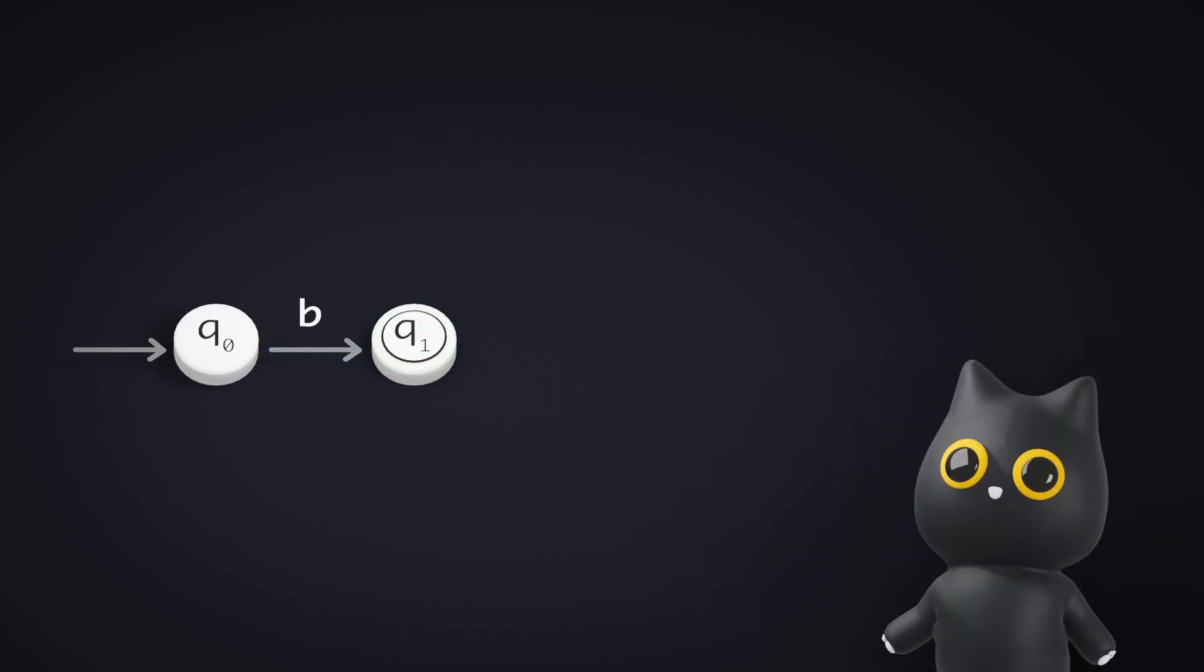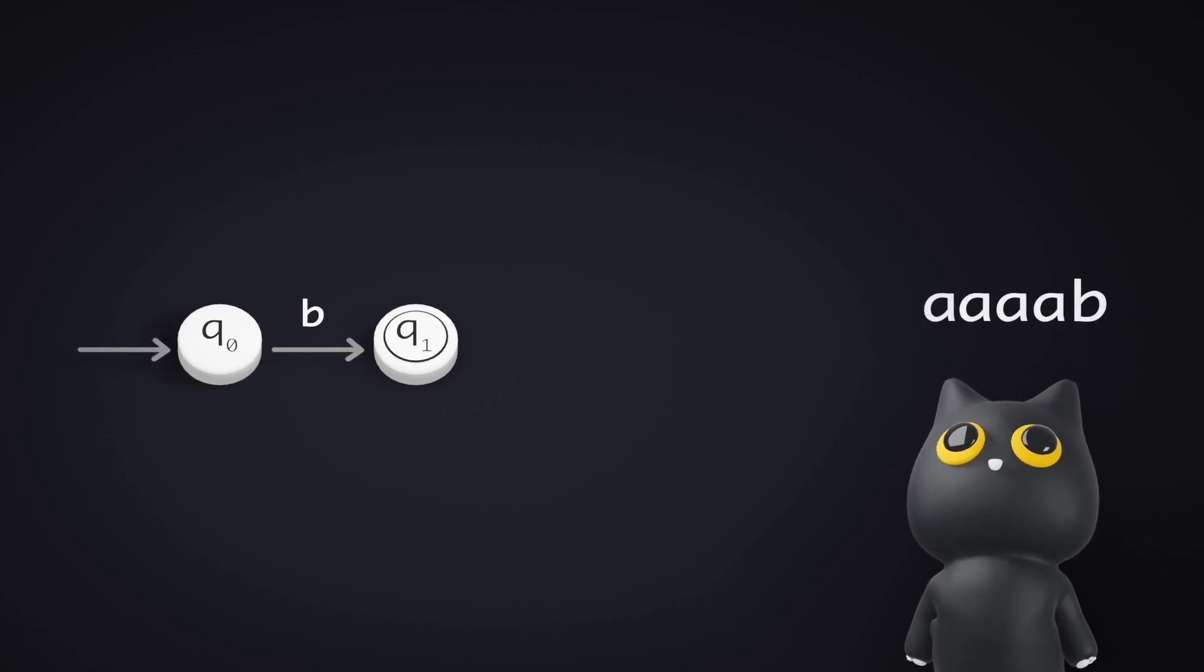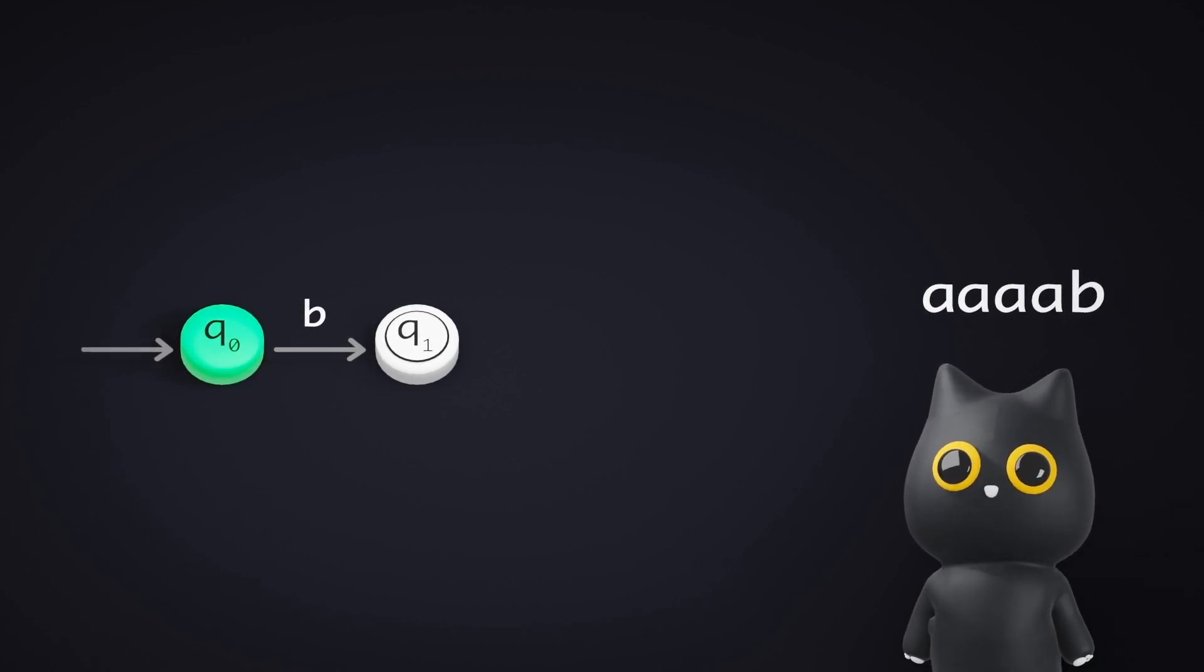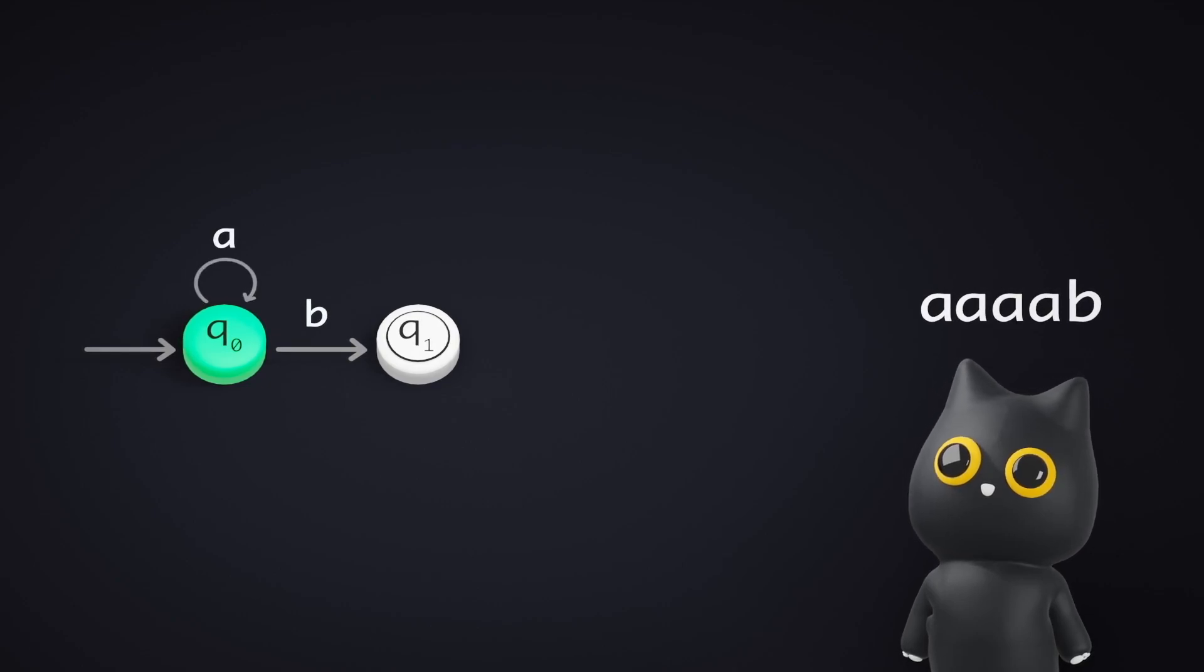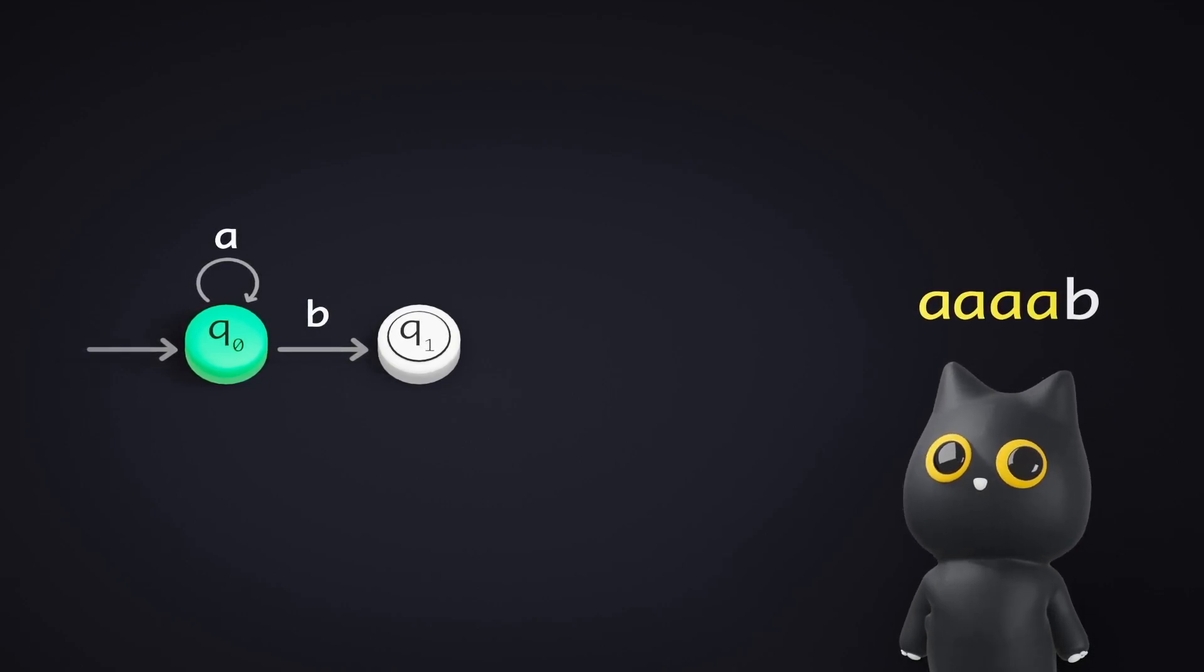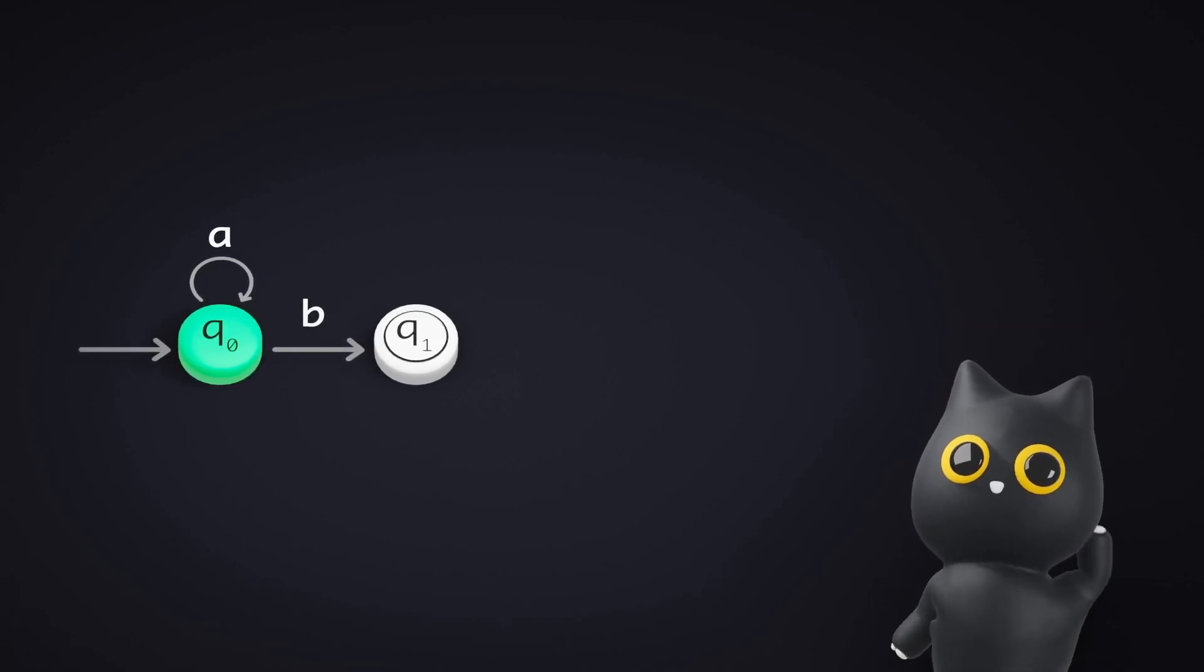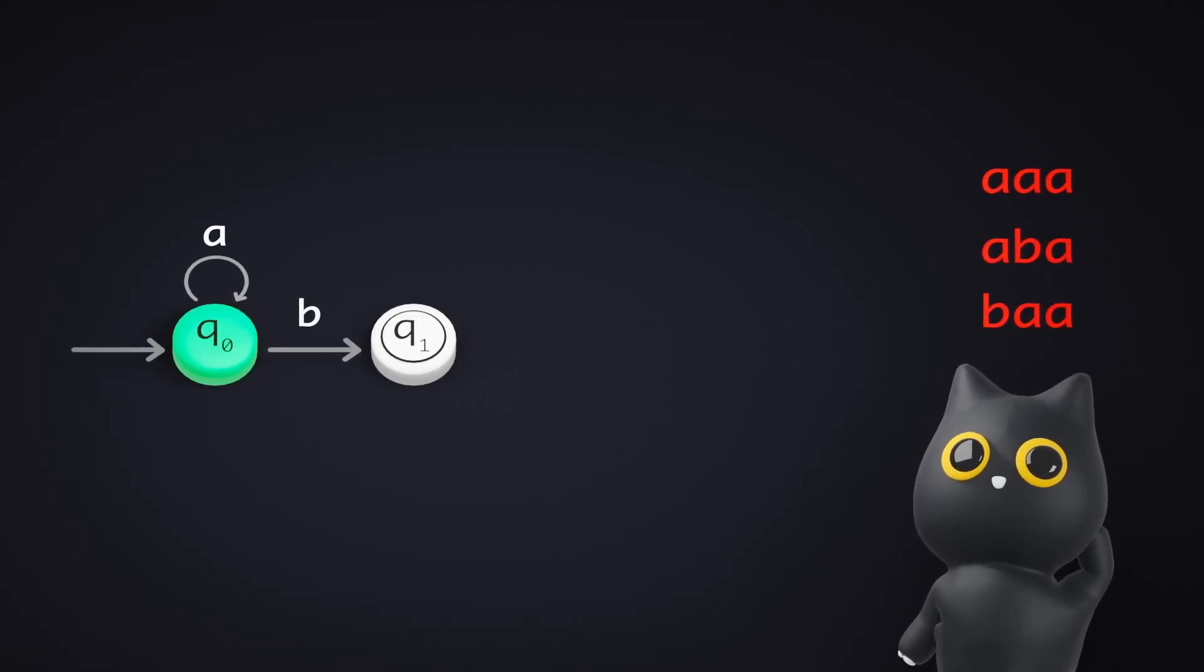For all other strings that we need to accept, it is simple since we need to prepend the A's before the B. So, at the start state, we have a transition to itself when we see the symbol A. Finally, as usual, we finish by thinking about how to represent the rejected strings using a machine.